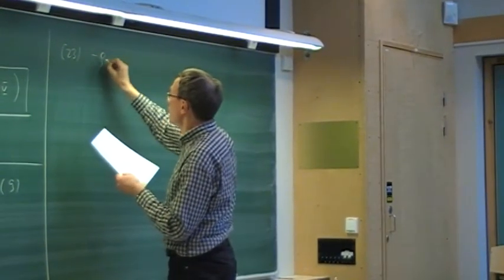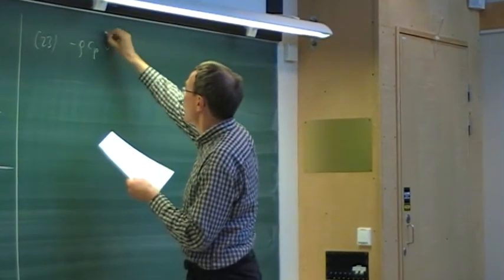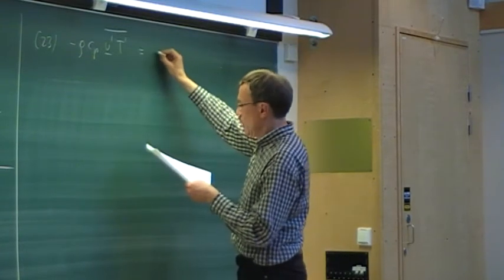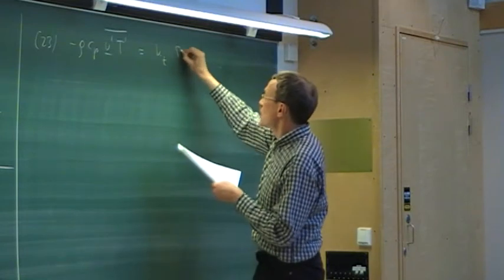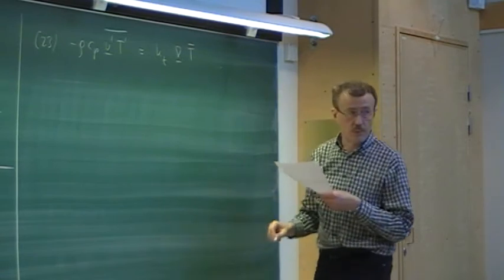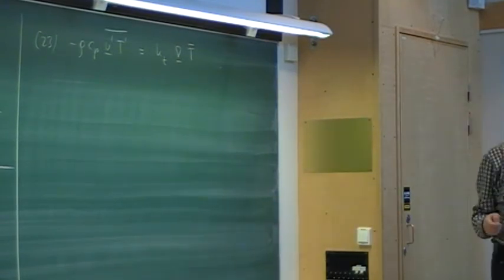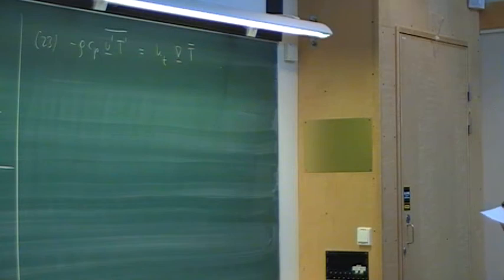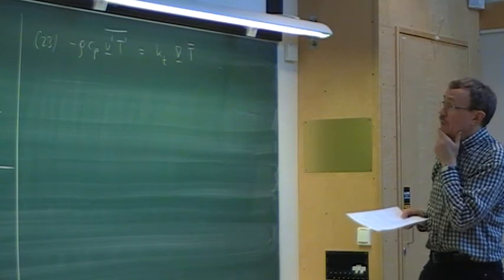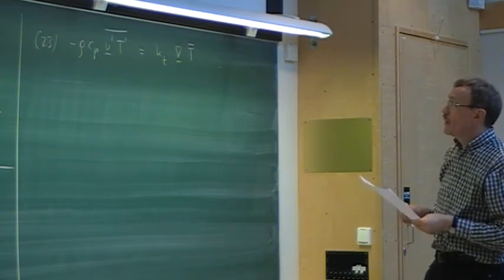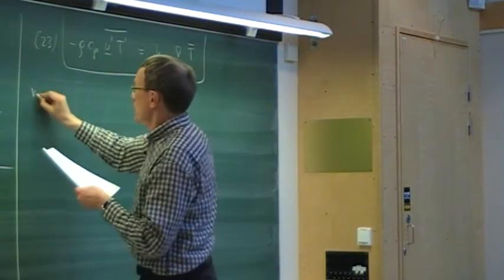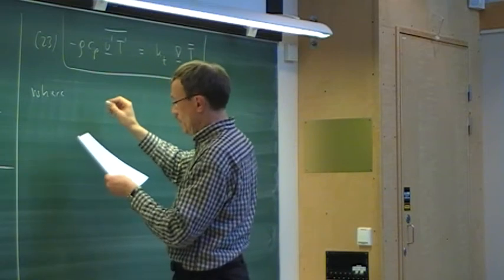The turbulent contribution in the energy equation is approximated as: the time average of minus ρCp u′T′ equals the turbulent thermal conductivity k_T times the gradient of the mean temperature. We do here the same thing that we did for the Reynolds shear stress — approximating this turbulent term analogously to how we approximate the heat flux for a Newtonian fluid.